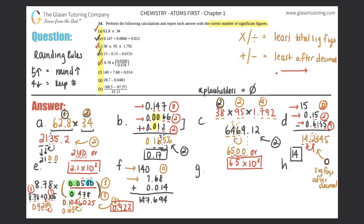For 7.68, sig figs after the decimal are 6 and 8 — two. For 0.014, the leading zero doesn't count, so 1 and 4 give two. But zero is still the lowest, so the answer should have zero sig figs after the decimal. The 1, 4, and 7 count as they're before the decimal. The digit 6 after is five or above, so round up: 147 becomes 148. That's the answer for f.